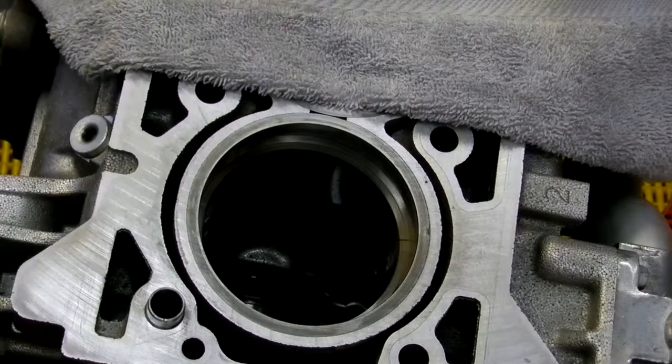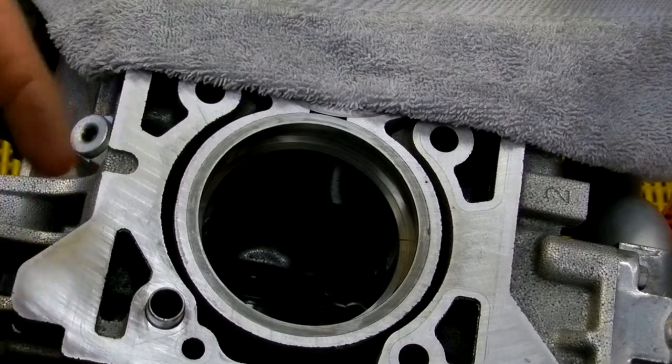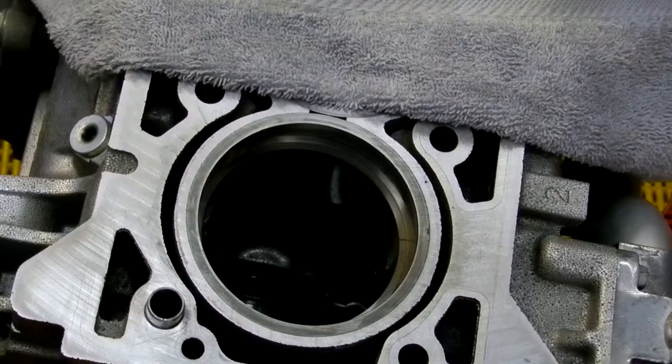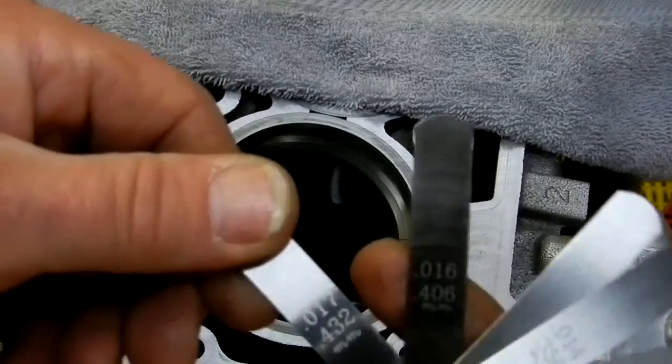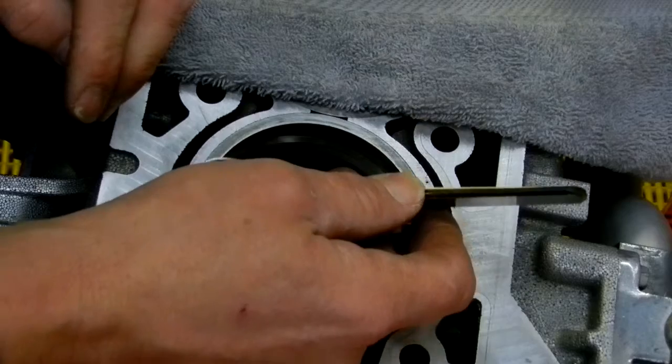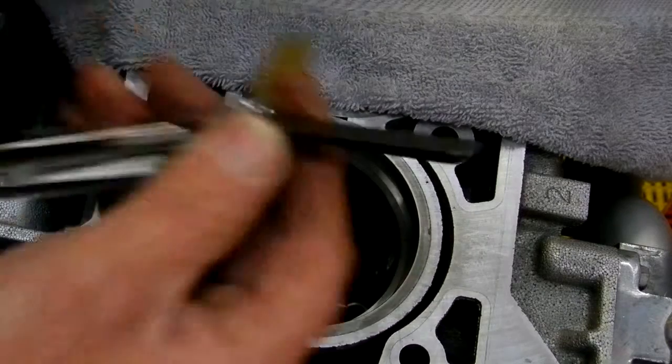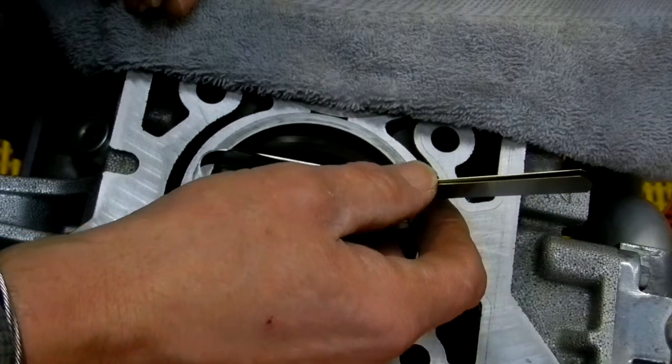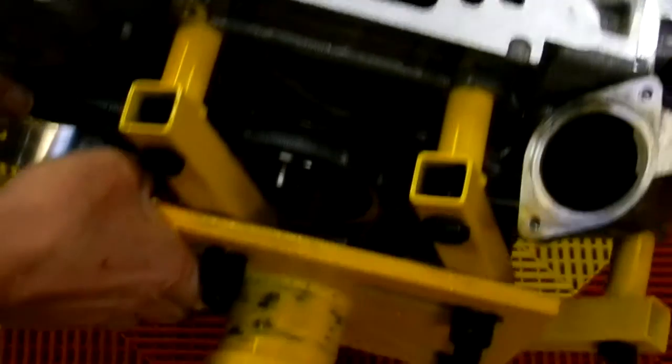Then we take the feeler gauges. As I said before, we're looking for 17 thou with a gap. I know these are going to be tight just off previous experience. Just to double check before I start grinding, I'll grab 17 thou, try and slide it in, and it's not even close. Just to give me a reference as to how far this is out, I'll grab a hundredth of an inch or 10 thou. That kind of barely goes in, so I know I've got a fair amount of grinding to do.